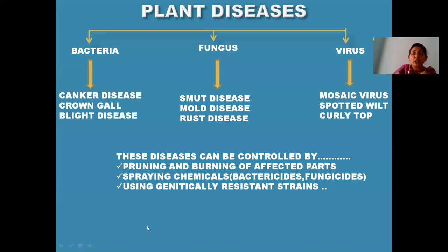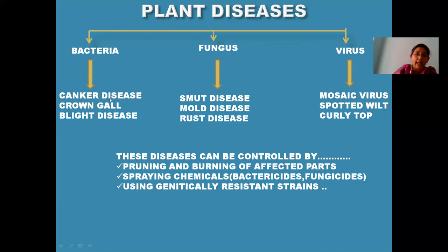Now we will see what plant diseases are caused due to microorganisms. Most of the microorganisms are also harmful to the plant. The microorganisms here are bacteria, fungus, and virus. Bacteria causes canker disease, crown gall, and blight disease in plants, whereas fungus causes smut disease, mold disease, and rust disease. And the virus causes mosaic virus disease, spotted wilt disease, and curly top. Many more diseases are caused by these microorganisms.